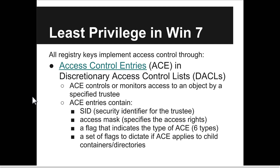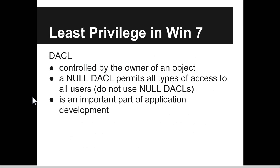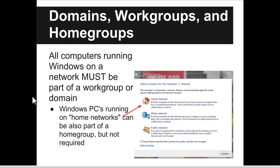There are six types of ACE flags — flags to dictate which type of entry it is, and sets of flags to dictate whether the access control entry applies to child containers and directories. This is very important for application development.